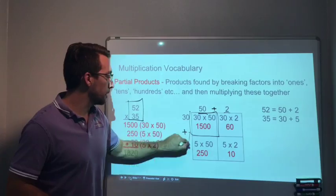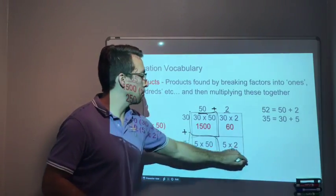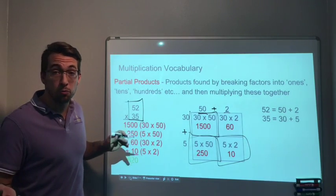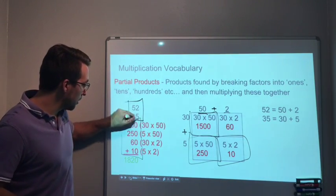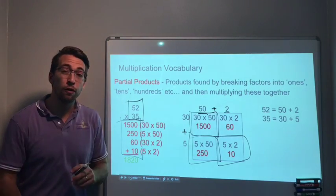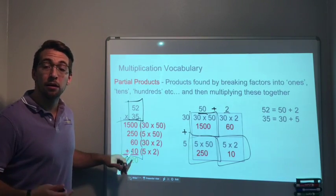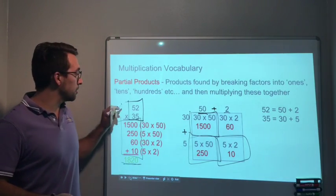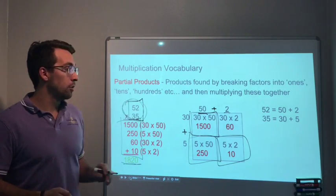So a partial product is any of these squares. This is a partial product, this is a partial product. And what you can do with these partial products is add them together. This is now an addition problem: 1,500 + 250 + 60 + 10. What's my answer? 1,820 is my final answer to the original math problem.